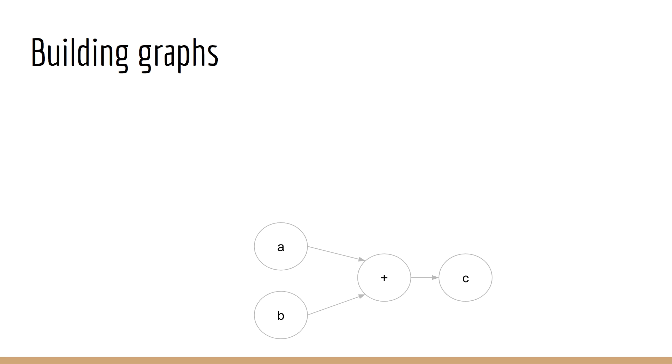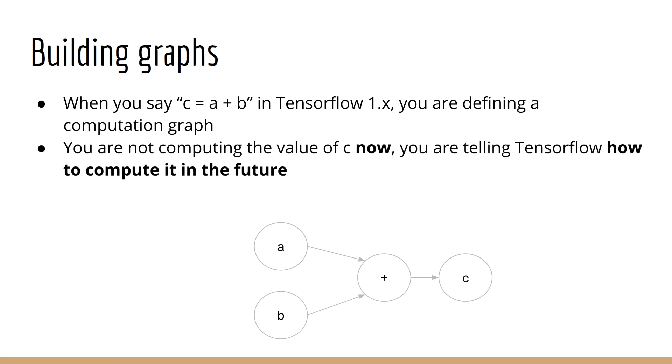The reason for this is, TensorFlow 1 does not do computation on the fly. Instead, what you are really doing is called building a graph. When you define TensorFlow variables as functions of other variables, all you're doing is telling TensorFlow how those variables are to be computed in the future. Now, you might be wondering, what do I mean by in the future? a is 1 and b is 2. What does in the future have to do with this? Well, to understand that, we have to first talk about placeholders.